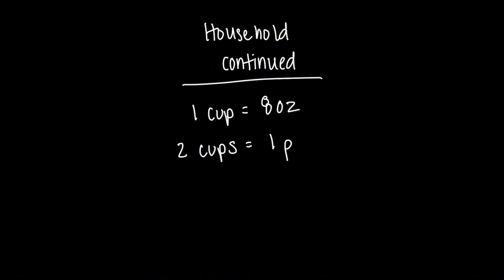All right, so now we'll continue with other household measurements, like your cups and your pints, your quarts and your gallons. So the first one is the cup. One cup equals 8 ounces, or if you can commit it to memory, that's also 240 ml. And then 2 cups is 1 pint, 2 pints is 1 quart, and then 4 quarts is a gallon.